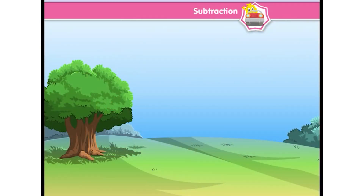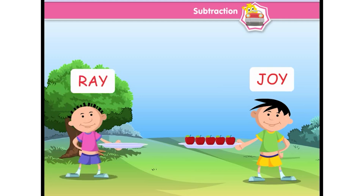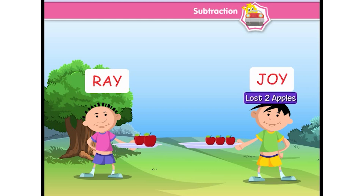For example, Joy has 5 apples. He gives 2 apples to Ray. So now, 3 apples are left with Joy. Here, Joy has lost 2 apples.